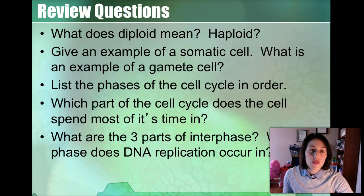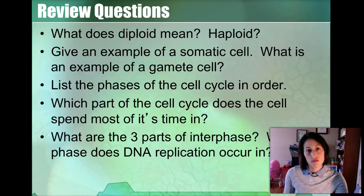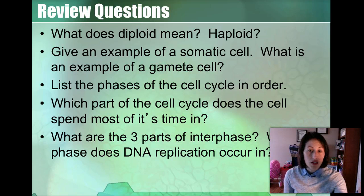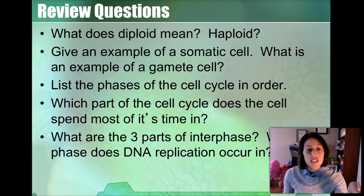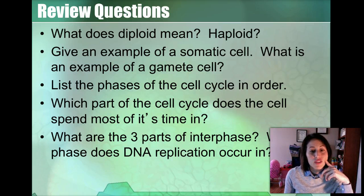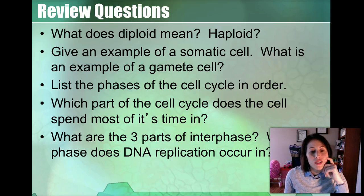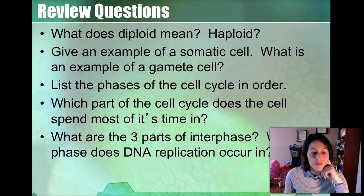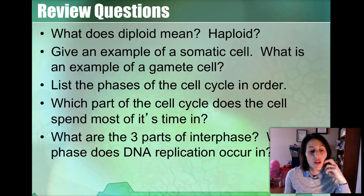Just a really quick review — go through these questions and see if you can answer them. What does diploid mean? What does haploid mean? What is an example of a somatic cell? What's an example of a gamete cell? List the phases of the cell cycle in order — there were five. Which part of the cell cycle does the cell spend most of its time in? What are the three parts of interphase? Which phase does DNA replication occur? You really need to know the answer to all of these questions. If you don't, go back and watch the first video again.